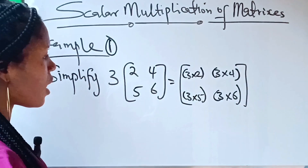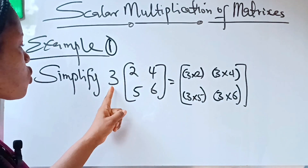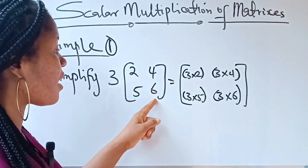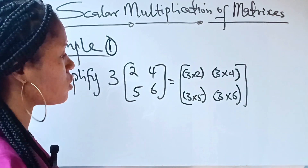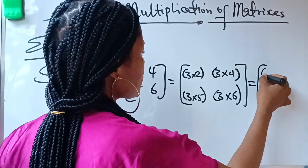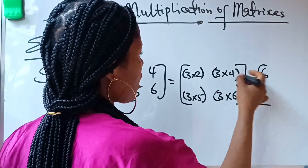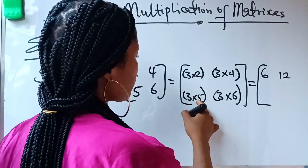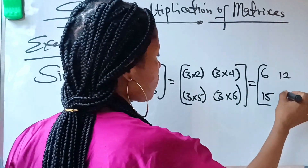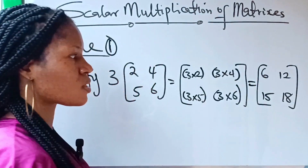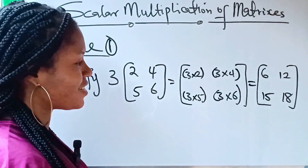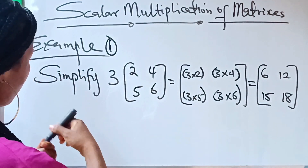Notice that all I did was use this scalar to multiply all the elements inside the matrix. So this gives us: 3×2 = 6, 3×4 = 12, 3×5 = 15, and 3×6 = 18. So the result is the matrix [6, 12; 15, 18]. It's very easy, right?